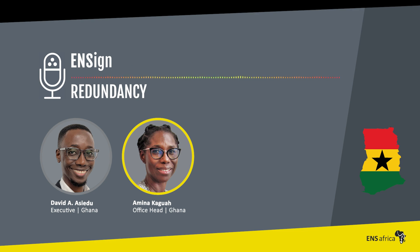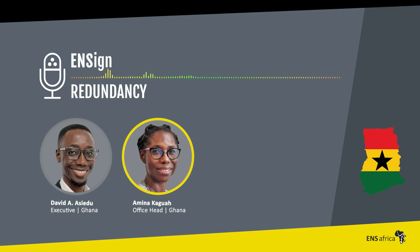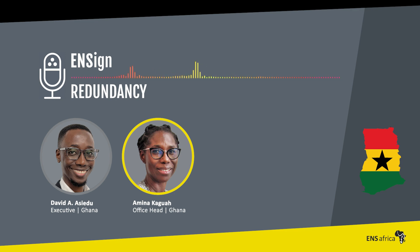To clarify: in the case of redundancy type two — where the business closes down, or employees are transferred to another employer, or are terminated because of a business arrangement — the payment of redundancy pay is mandatory. So it is mandatory under redundancy type two for the employer to pay redundancy pay. The clarification that the Supreme Court case has brought relates specifically to redundancy type one.